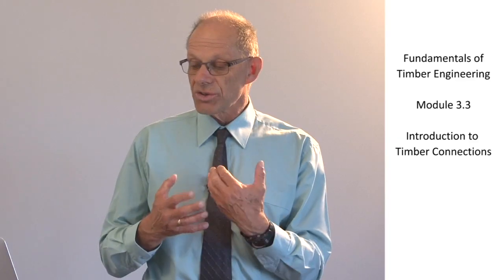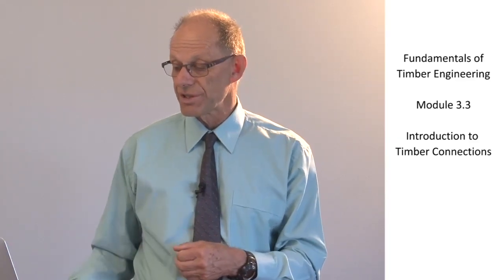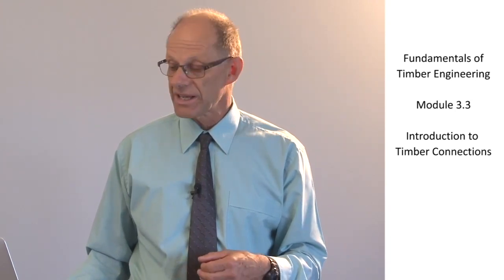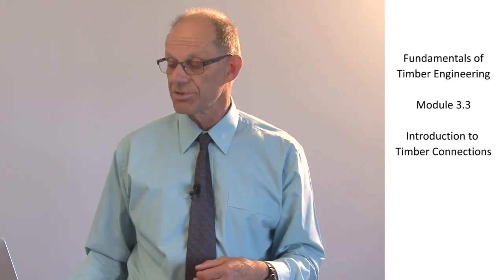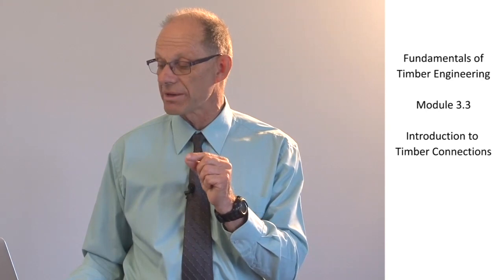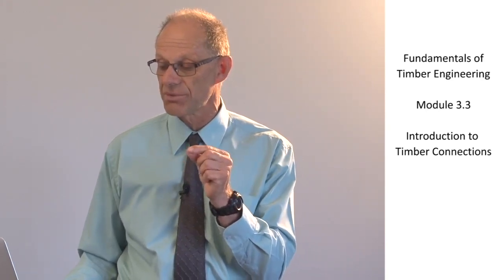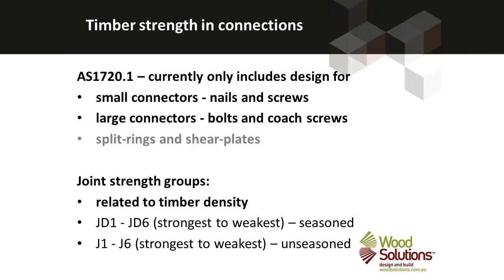In order to model the behaviour of the timber, we use joint strength groups. We classify the timber into joint strength groups with JD1 being the highest joint strength group and J6 being the weakest. If there's a D in the designation, it's seasoned timber; if there's no D, it's unseasoned.